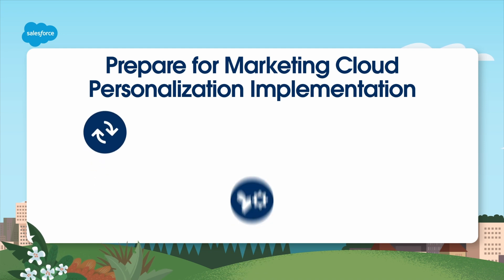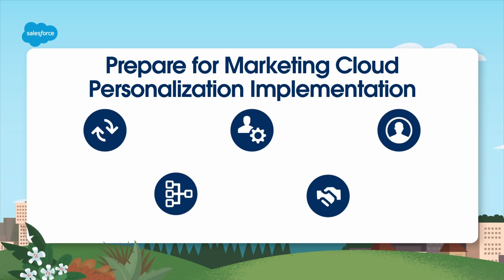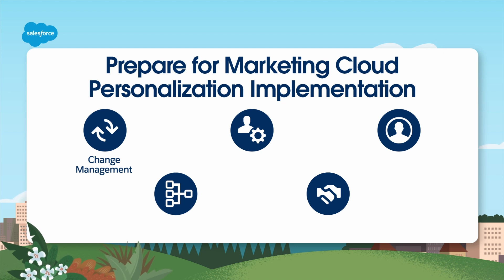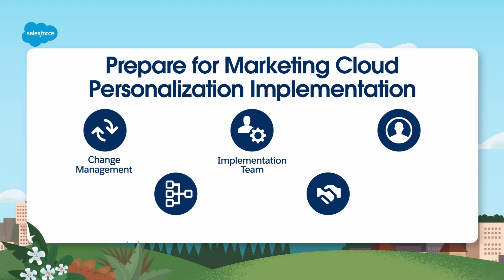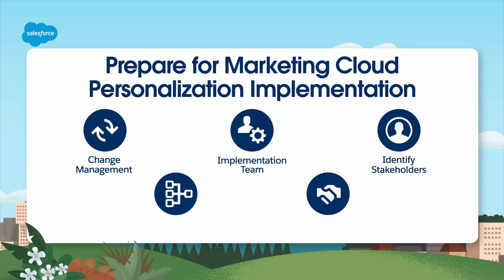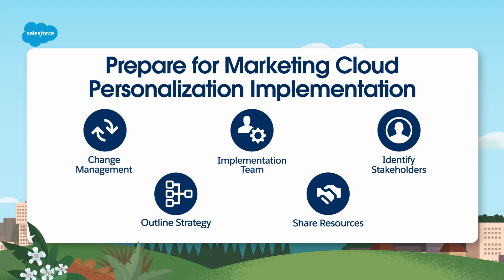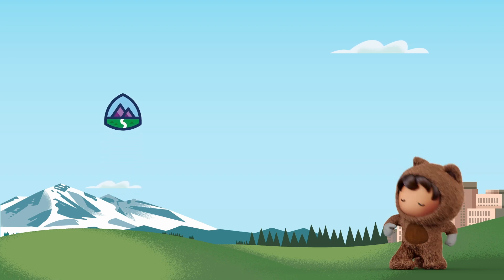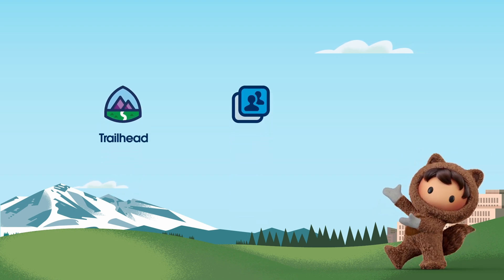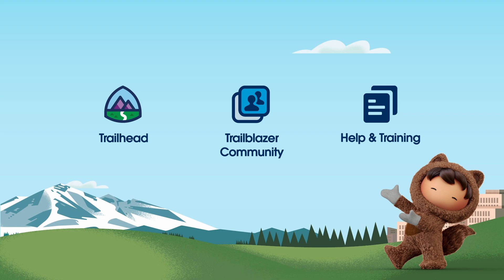Let's review the five steps to prepare for your Marketing Cloud Personalization implementation. First, consider how change will affect your people, process, and technology. Next, get connected with an expert to help your implementation go smoothly. Third, get the right internal people involved. Then outline your strategy, including goals and key use cases. Finally, share resources with stakeholders and set a deadline for everyone to complete the first learning path. For more information, check out help.salesforce.com or visit us on the trail at trailhead.salesforce.com.